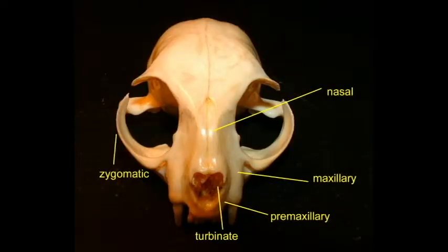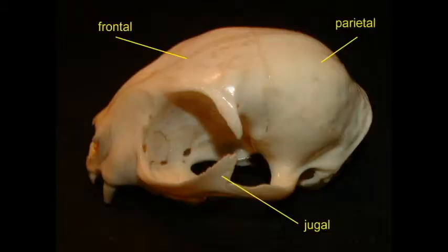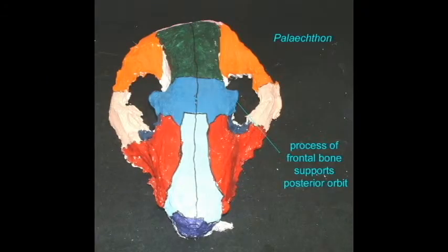In the skull of a cat, you can see that while there is no complete post-orbital bar, the frontal bone and the jugal/zygomatic bone have evolved extensions or processes which come close to touching. Therefore, there is almost a complete post-orbital bar surrounding the eye and giving it some support.